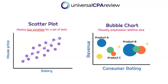A bubble chart is very similar to a scatter plot, except the bubbles are all different sizes. A bubble chart allows us to add a third variable. The two variables here are revenue and consumer rating, but a third variable — such as gross margin — drives the change in bubble size. Products A and B have higher gross margins than the other products, which is why their bubbles are larger. Bubble charts are great because they allow us to visually see what pops out.